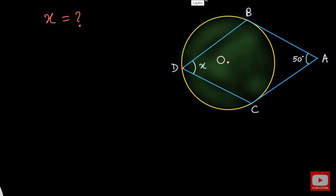The first step here is I am going to join OB and OC, which are nothing but the radii of this circle. So this is OB and this is OC.